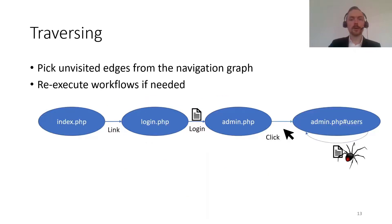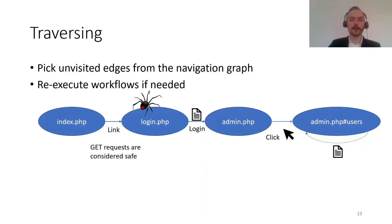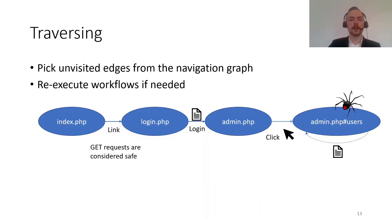For traversing, it's important to ensure that the application is in a good state before we add any values. So if we want to inject a new user, we would first go back to what we consider a safe state — a GET request in this case. Then the scanner resubmits the login form, clicks to generate the element, and only then inserts the new value. This ensures the server is in a good state before we inject any values, and we re-execute workflows if needed.